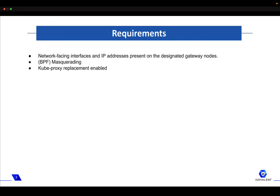Cilium must make use of network-facing interfaces and IP addresses present on your designated gateway nodes. These interfaces and IP addresses must be provisioned and configured by the operator based on your networking environment. This process is highly dependent on your environment. For example, in AWS or EKS environments, this may mean that you create one or more elastic network interfaces with one or more IP addresses and attach them to instances that serve as gateway nodes, in order to have AWS adequately route traffic flowing from and to your instances.